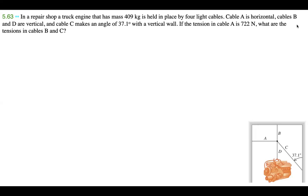We have a diagram in the bottom right corner that we can use to help solve this problem. The engine has a mass of 409 kilograms, held in place by four cables labeled A, B, C, and D. Cable A is horizontal, cables B and D are vertical, and cable C makes an angle of 37.1 degrees with the vertical wall. We need to find tensions in cables B and C.